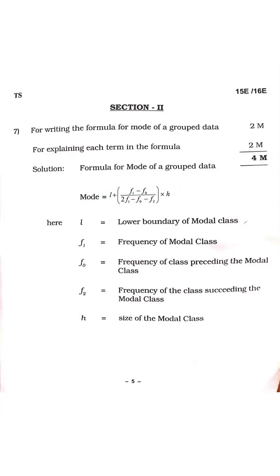Section 2, Question 7: for writing the formula of mode you will get two marks, and for explaining each term you will get two more marks, totaling four marks. Mean, median, and mode are three very important topics — you will definitely get one in your exam for four marks. Please practice these formulae and elaborate them. If you write the formula but do not explain the terms, you still get two marks for the formula alone.